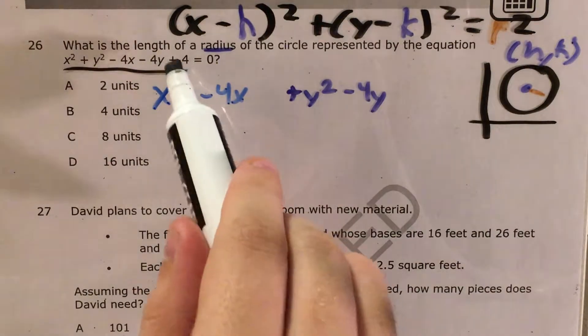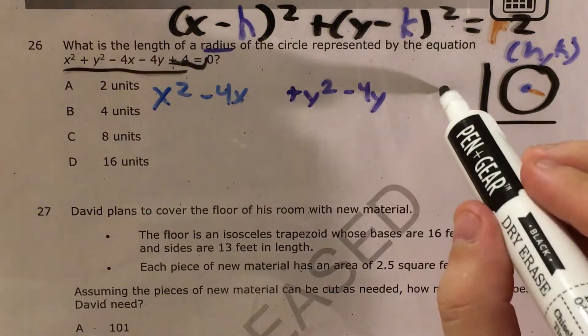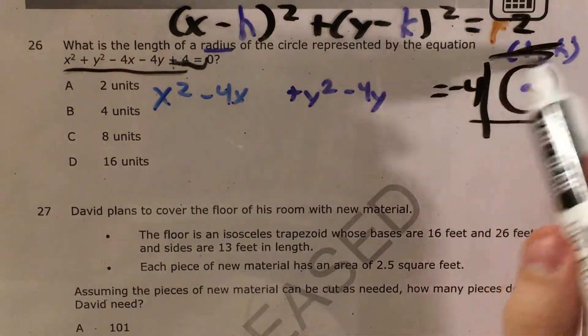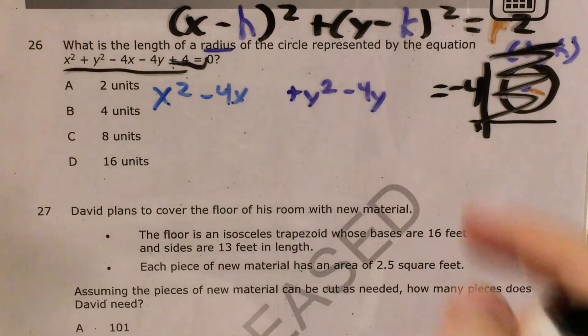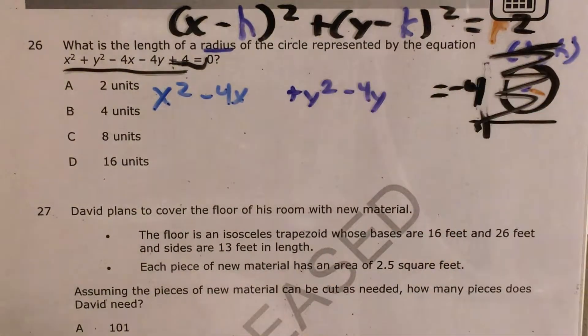Plus 4, and I'll also go ahead and take this plus 4 and move it to the other side of the equation for the sake of space. Equals negative 4. And we don't need all this anymore. We're just interested in this negative 4.